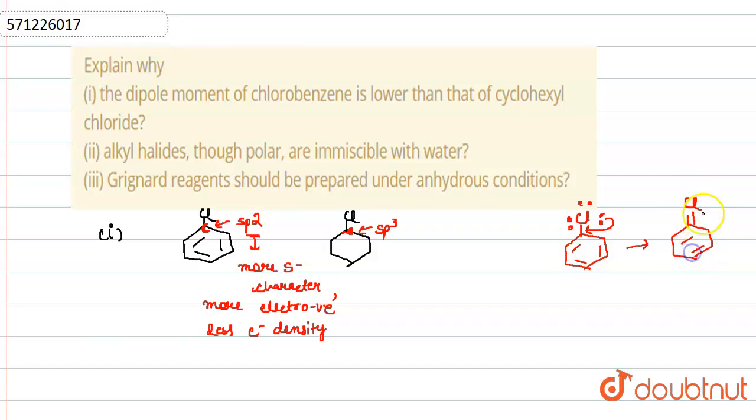So, due to this double bond character, basically what happens? Due to this double bond character, we can say that the size of the bond also decreases.